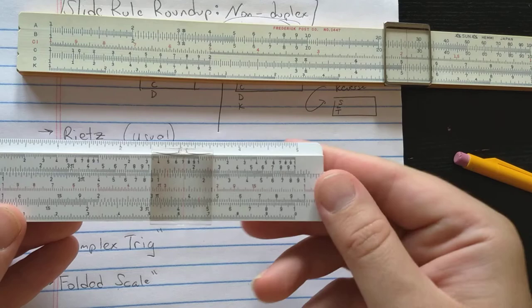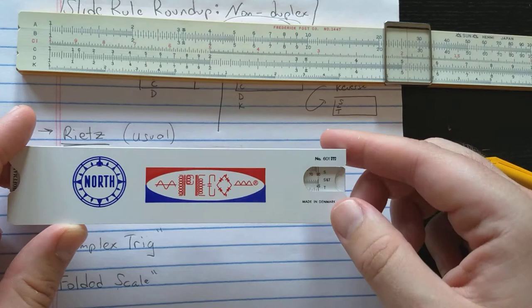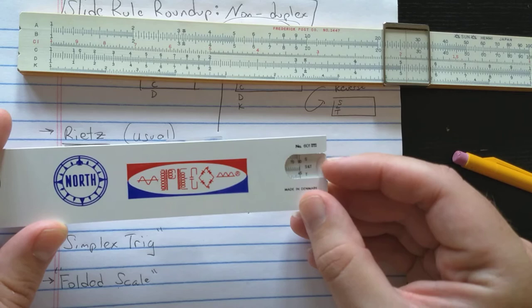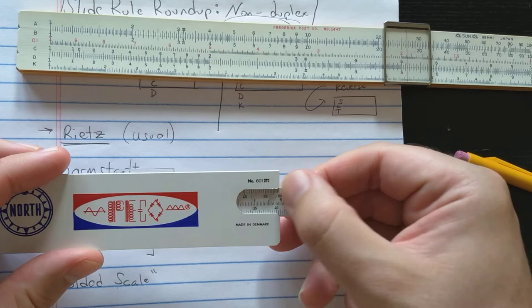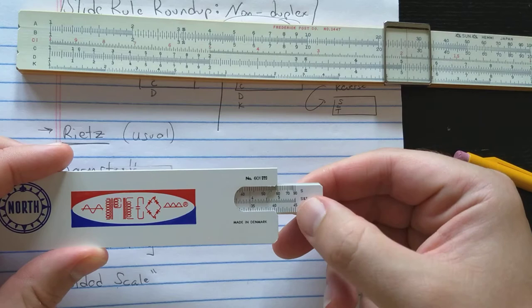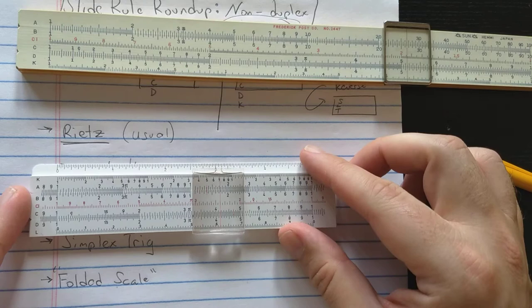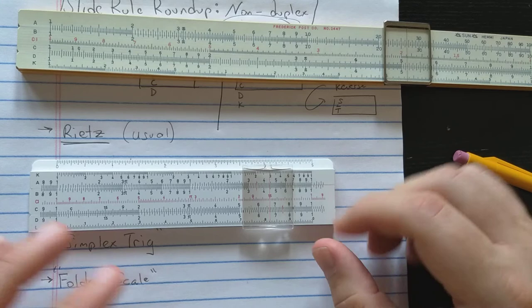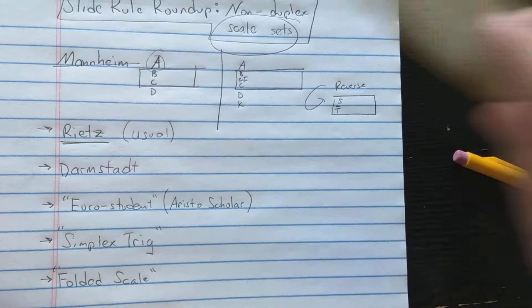Rietz is really one of my favorite slide rule layouts. I like it because you can use the L scale without using the reverse of the slide rule. And I like it because it has the extra accuracy of the S scale. And additionally, there are some maneuvers you can do for trigonometry only when both are keyed to C and D, the S and the T scale. So the Rietz is really one of my favorite slide rule layouts in terms of simple slide rules. Very nice, elegant layout.